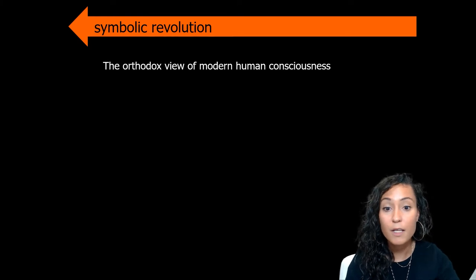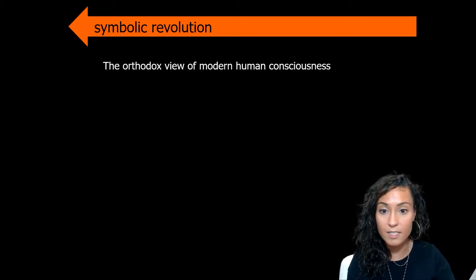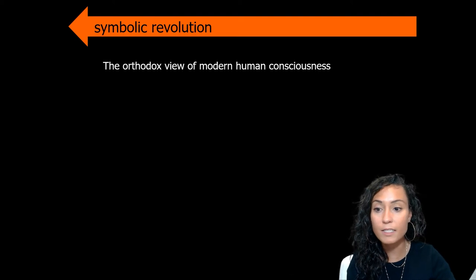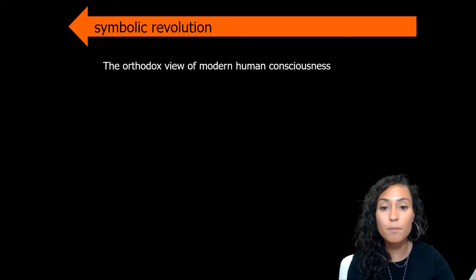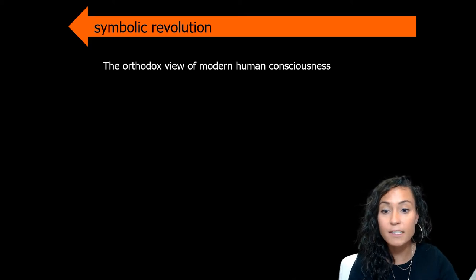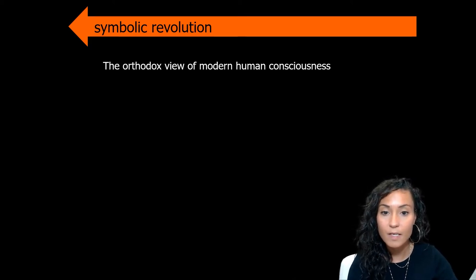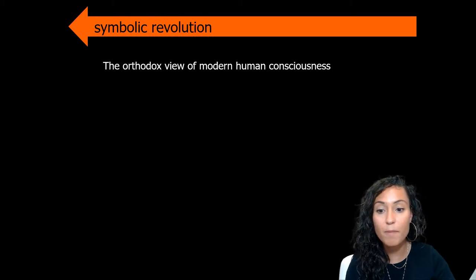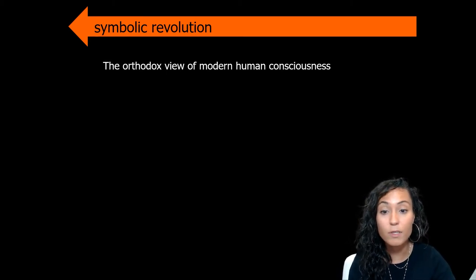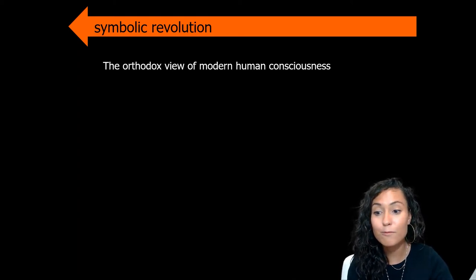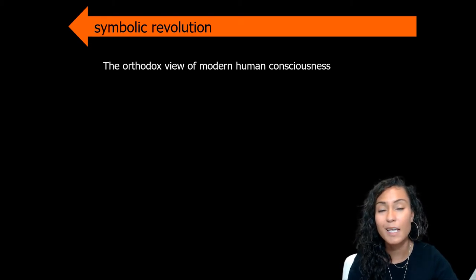According to Lewis-Williams, the orthodox view of modern human consciousness entails abstract thinking, which refers to the ability to act with reference to abstract concepts not limited in time and space. It also involves planning depth, or the ability to formulate strategies based on past experience and to act upon them in a group context. This modern human consciousness is also behavioral, economic, and technological in terms of its innovation, and finally, it is symbolic behavior — the ability to represent objects, people, and abstract concepts with arbitrary symbols, vocal or visual, and to reify or reinforce such symbols in cultural practice.